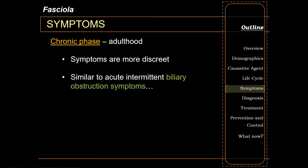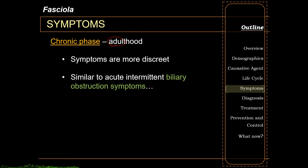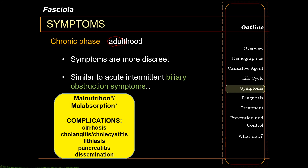The chronic phase of fascioliasis refers to the adult stage of the parasite. During this stage, the parasite does nothing more than eat and produce eggs. The adult Fasciola resides quietly inside the biliary tract and does not exert much of an immune response from the human body, so symptoms are more discreet. If symptoms are present, they are similar to acute intermittent biliary obstruction. Adults can cause obstruction, inflammation, and fibrosis, eventually leading to perioductal cirrhosis.